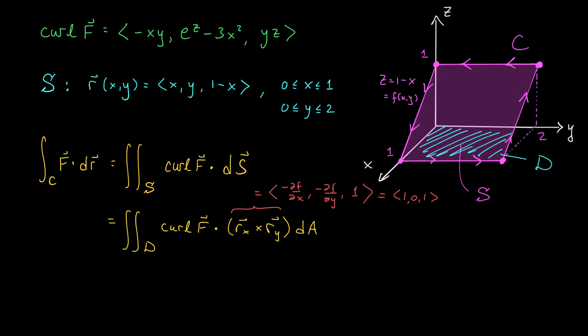Using my bounds on x and y, I can rewrite this integral as the integral from 0 to 1 of the integral from 0 to 2, and now I'm supposed to take the dot product of the curl of F with this vector <1, 0, 1>. That's going to leave me with -xy + yz dy dx. Notice that we still have this pesky z term floating around, but we really want everything expressed in terms of our two parameters, x and y. So I'm going to replace z with 1 - x. This gives me the integral from 0 to 1 of the integral from 0 to 2, and after some simplification, the integrand becomes y - 2xy dy dx.